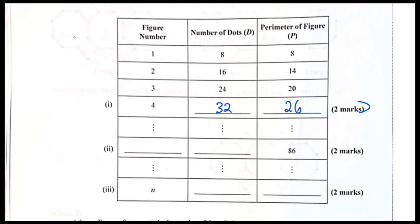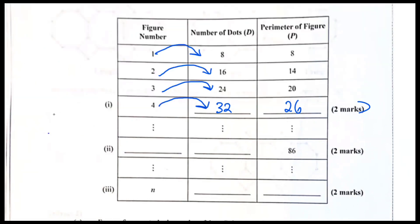They're going to skip ahead though — so if you reach 86, what could that figure number be? What you're required to do is figure out how. There is a direct relationship between your first column and your second column all the time — something happens to one and it turns into 8, something happens to two and it turns into 16, three turns into 24, four turns into 32. Whatever that relationship is, once you know it you could figure out what goes there, or work the reverse.